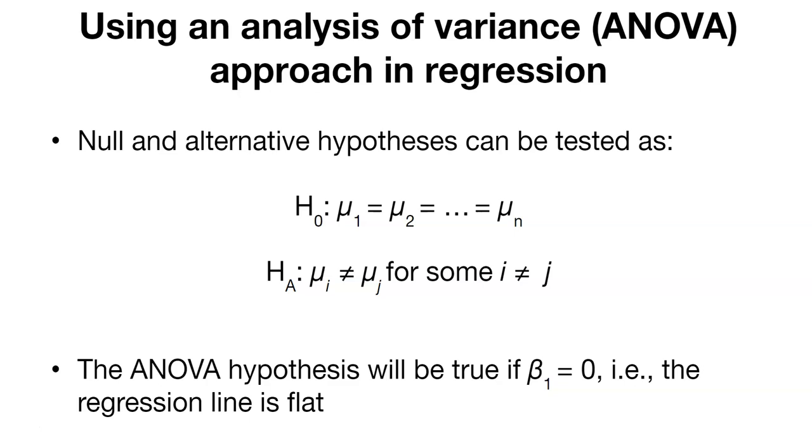The ANOVA hypothesis will only be true if beta 1 equals zero. That is, if beta 1 is zero, the slope is zero, that would mean the regression line is flat. So that would mean as x changes, nothing happens to y.